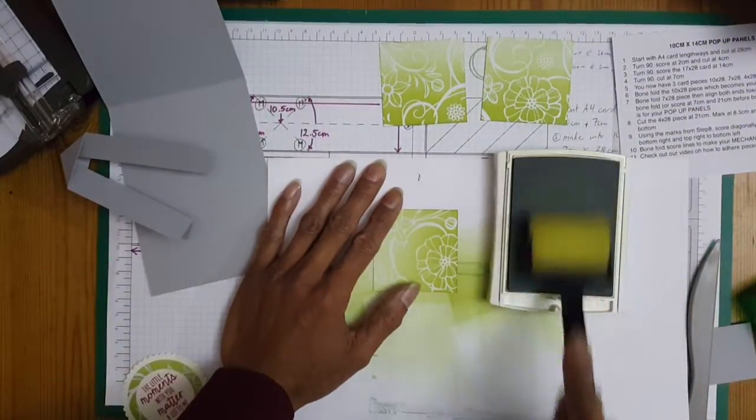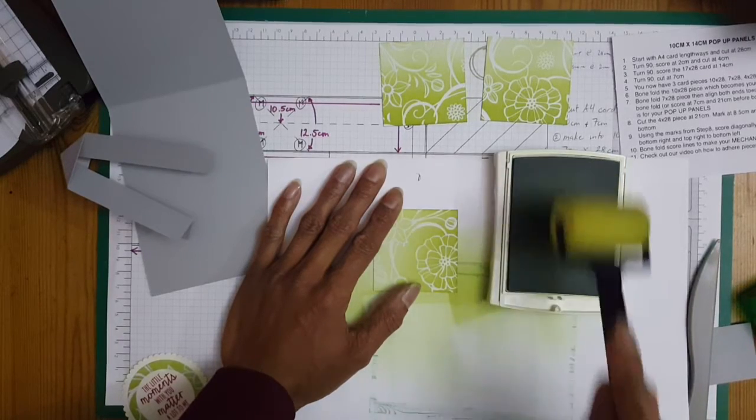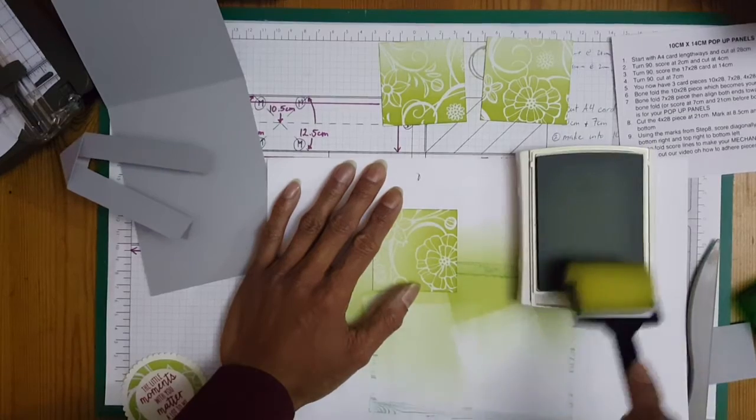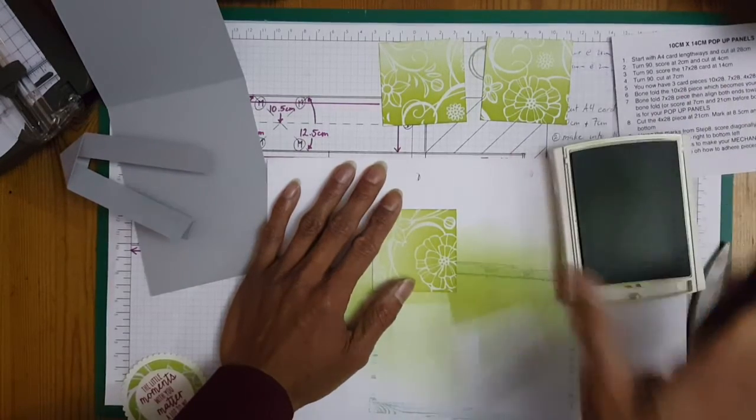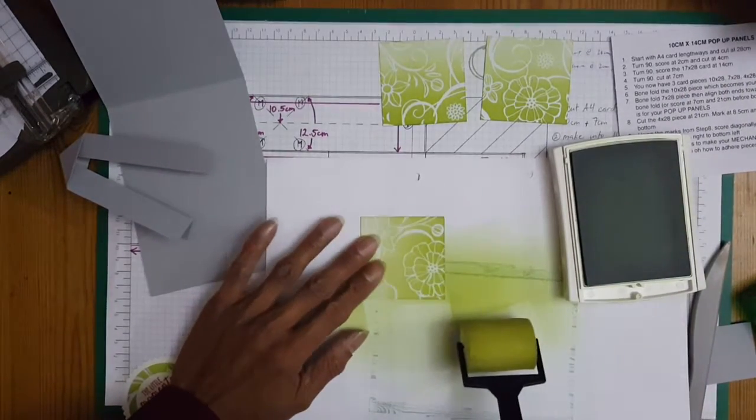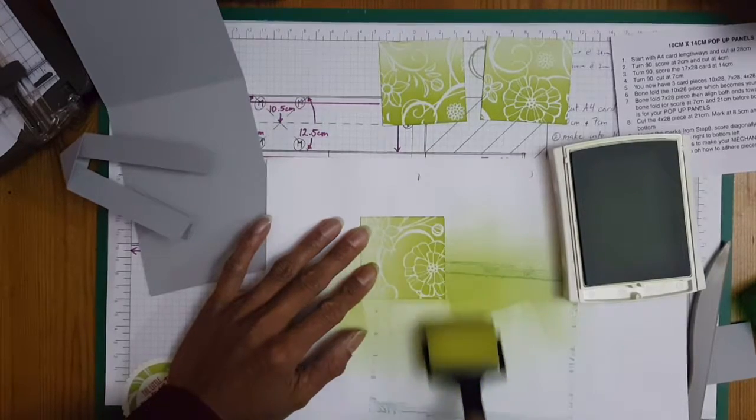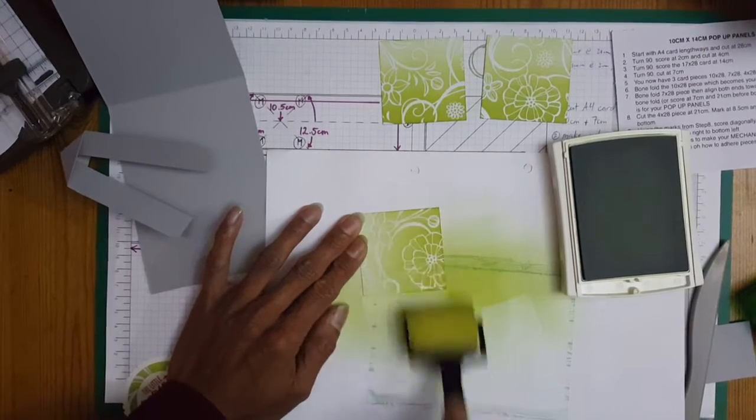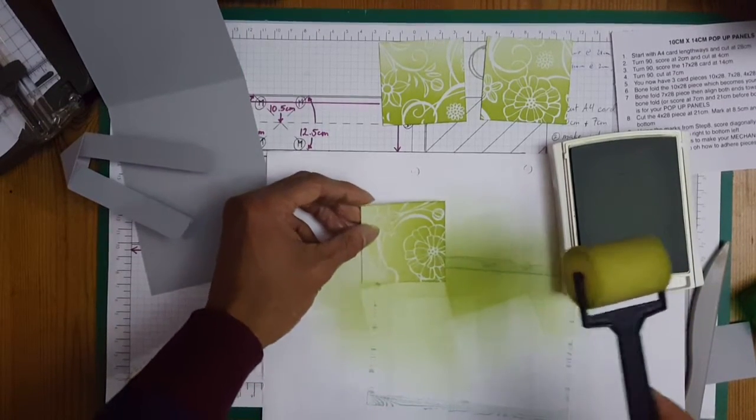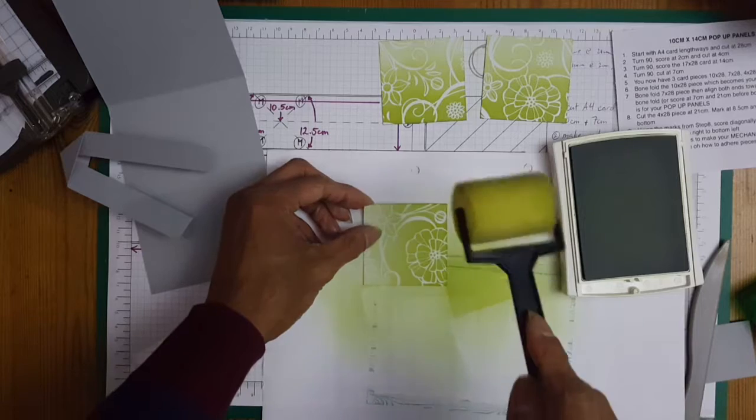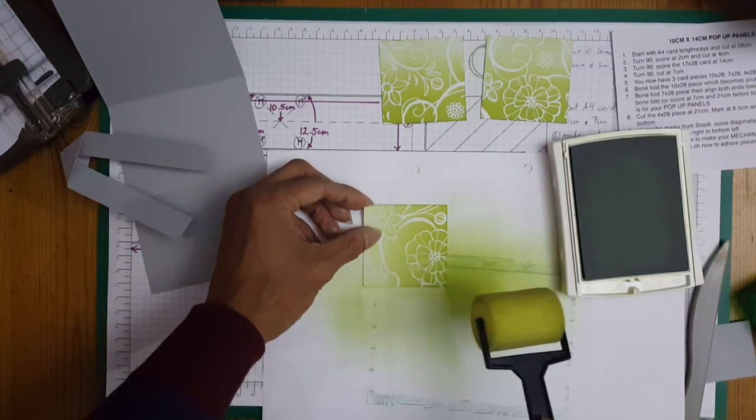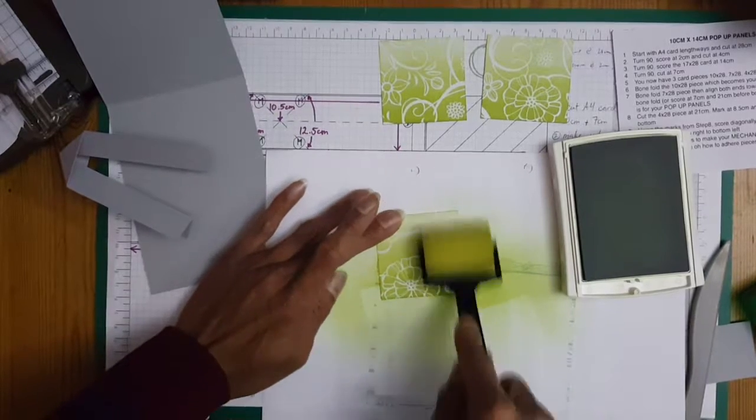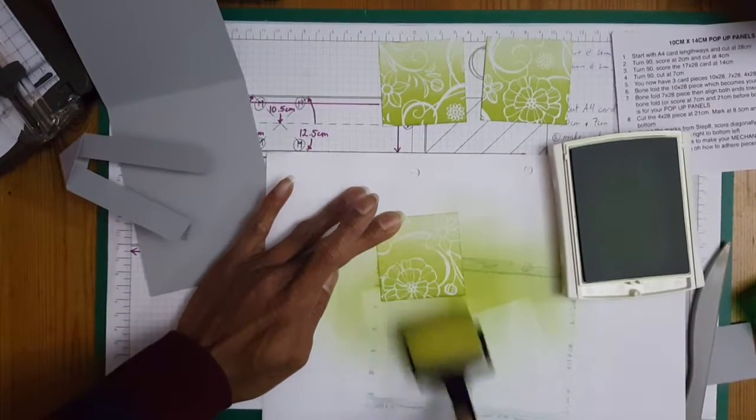Just make sure your sponge dauber, just roll it across the ink pad, making sure that every single point is inked up. And then just go from off the page and into the DSP. At first it doesn't seem like you're actually coloring the card, but the more you go over it the more it will darken. And I just go on one side.